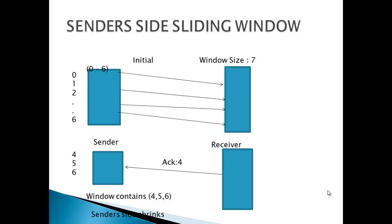from 0 to 3, then the sender's window will contain only frames 4, 5, and 6. That is, the window has shrunk.